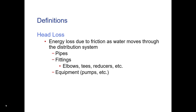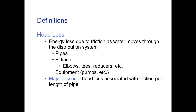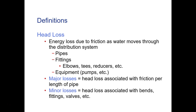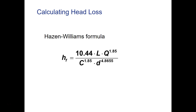When talking about losses through pipes, we call it head loss — the energy lost due to friction as water moves through the distribution system. This includes all pipes, fittings, elbows, tees, reducers, and any equipment in the way. These things slow the water down as it passes through smaller sections or rubs against the inside of the pipe. There are major losses from friction along the pipe length, and minor losses from bends, fittings, and valves. These are all calculated using the Hazen-Williams formula.